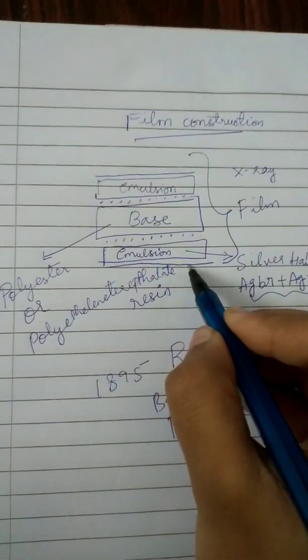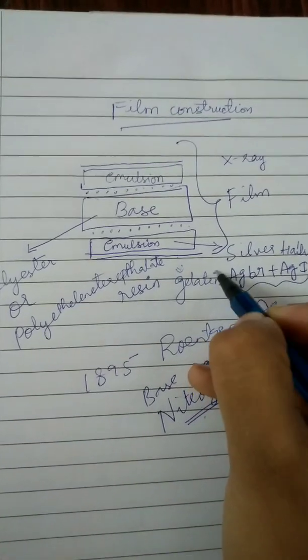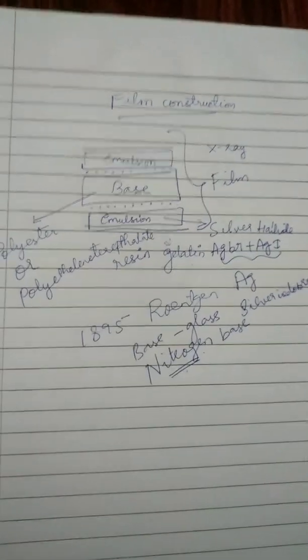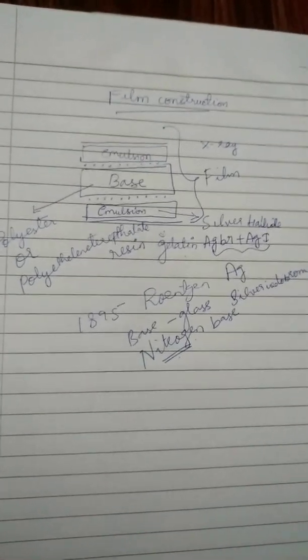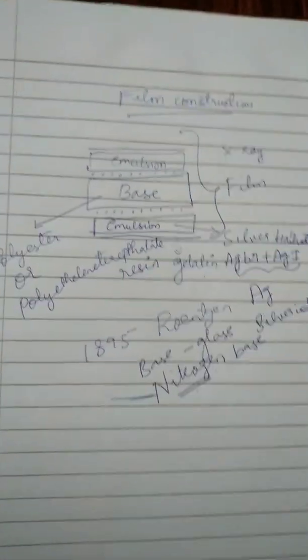And a supercoat is usually made up of gelatin. That usually supports or it will protect the emulsion layer from the mechanical stress. So this is all about construction of the film.